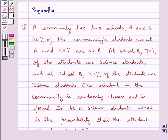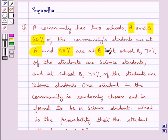Hello and welcome to the session. In this session we discuss the following question: a community has two schools A and B. 60% of the community students are at school A and 40% are at school B.